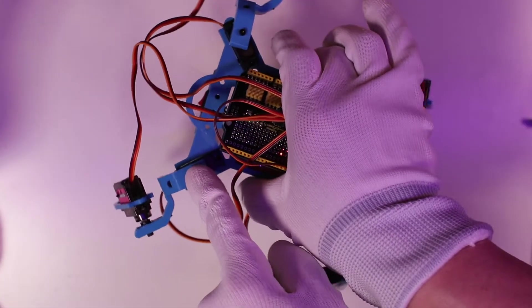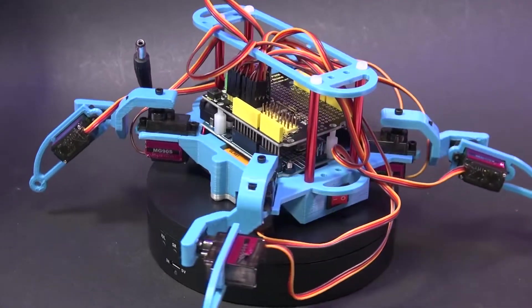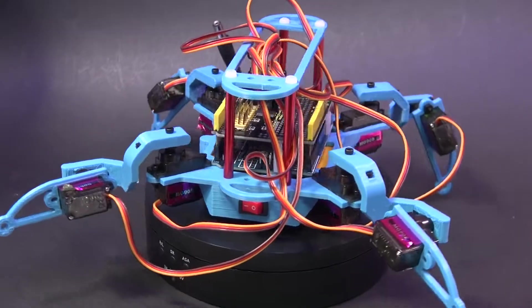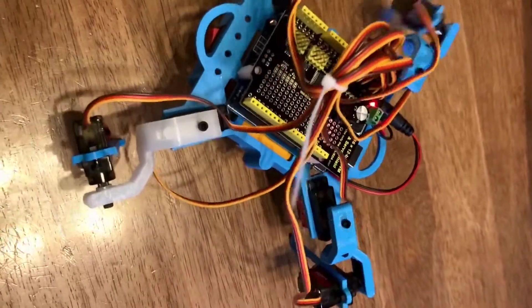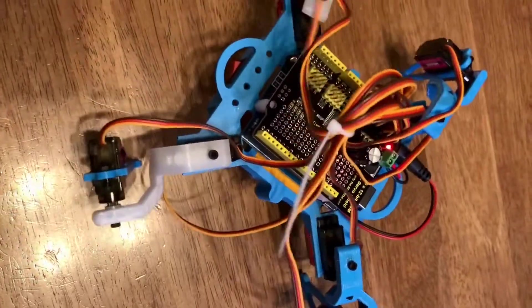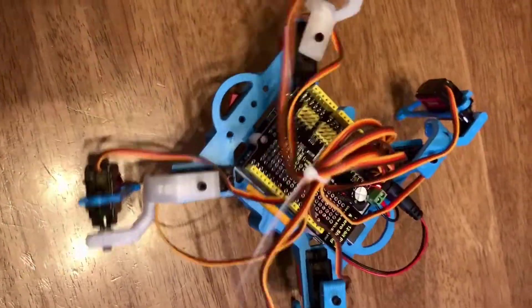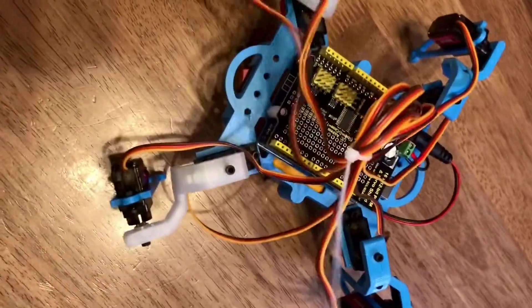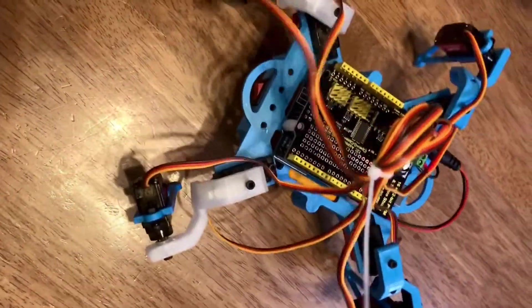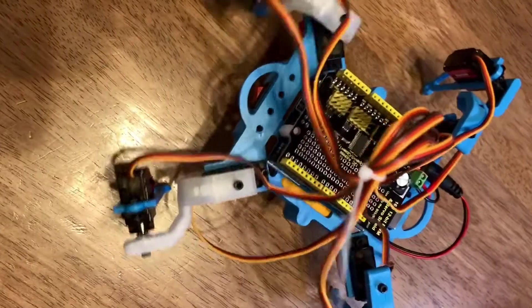And there you have it, the lightest spider robot in my spider robot history. It walks the same way as the previous version. When put on a slippery surface, the robot moves slower than expected. Because there's not enough friction. But I love it anyway.